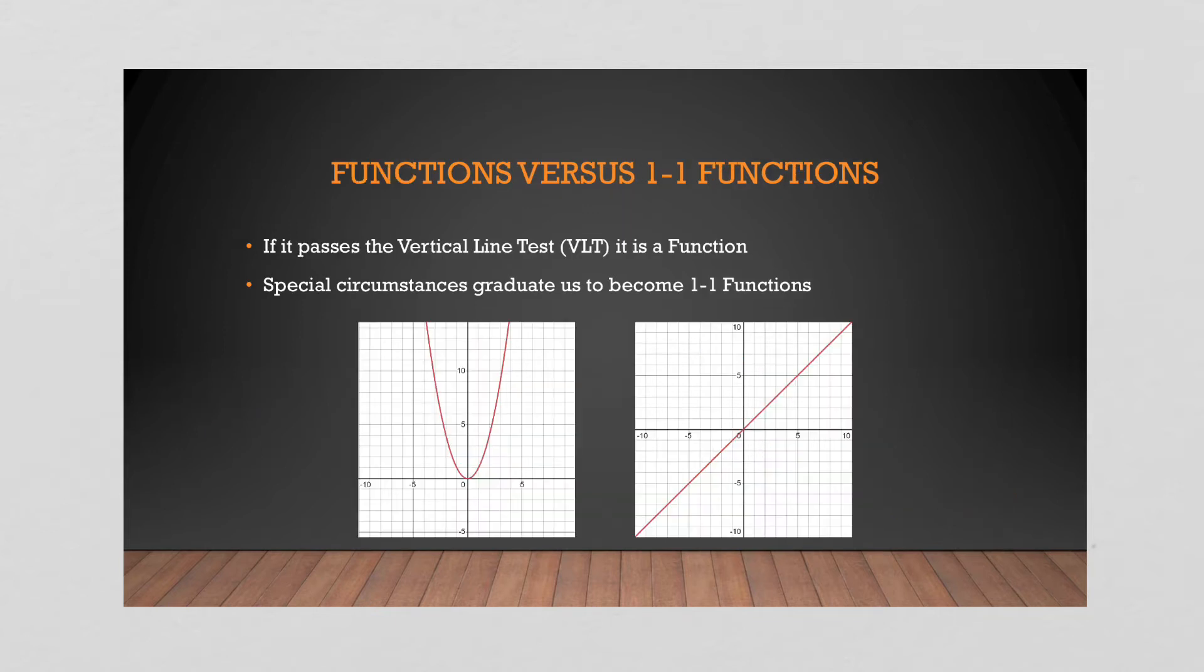So what about then from what's called a function to a one to one function? Well, in order to be a function, you've already passed the vertical line test. So you can see this graph, it passes the vertical line test, right? So we already know that it's a function. And you can't be a one to one function if you're not already a function. So your first criteria is you graduate, you pass the vertical line test.